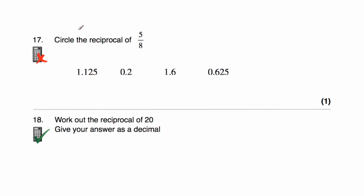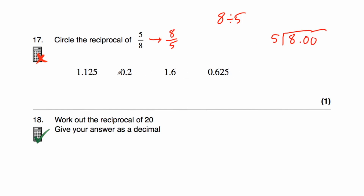Question 17: circle the reciprocal of 5 eighths. Interestingly, all the options are decimal numbers, so we need to find the reciprocal and then convert to decimal. Flipping 5 eighths over gives 8 fifths. To convert to decimal, divide numerator by denominator: 8 divided by 5. Using short division: 8 divided by 5 is 1 remainder 3, then 30 divided by 5 is 6, giving 1.6. So the reciprocal of 5 eighths is 1.6.